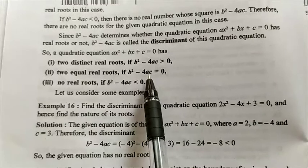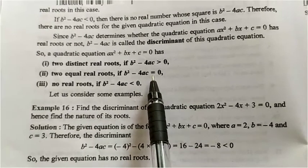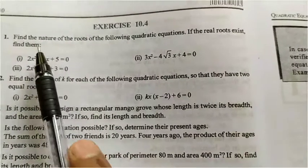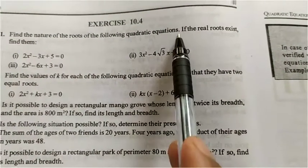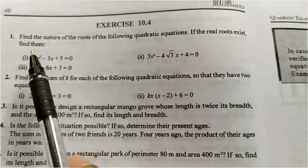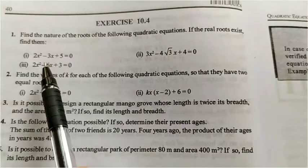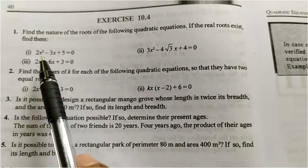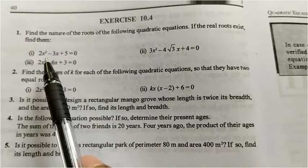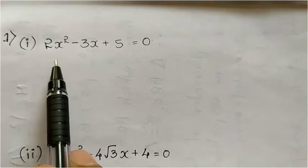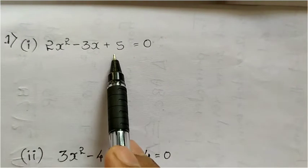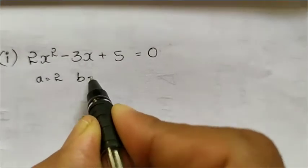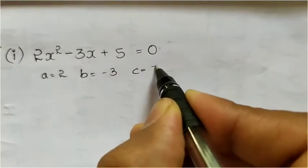Using this nature of roots, we are going to solve Exercise 4. In the first question: find the nature of roots of the following quadratic equations; if the real root exists, find them. For the first one, we write the discriminant b square minus 4ac. The given equation is 2x square minus 3x plus 5, so here a is 2, b is minus 3, and c is 5.